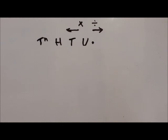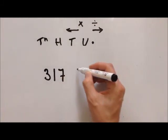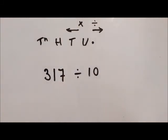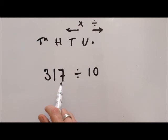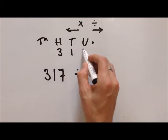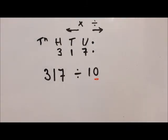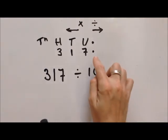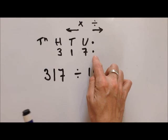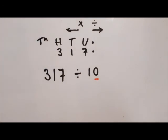Let's say we have a number like 317 and we're going to divide it by 10. There are no zeros on the end of this number. We put this in our columns, and everything moves to the right by the number of zeros on the divisor. What we need to remember is that the decimal place stays in the same position — it doesn't move. The number moves but the decimal place won't.